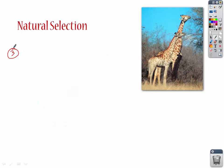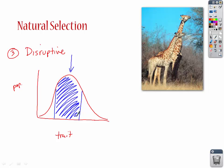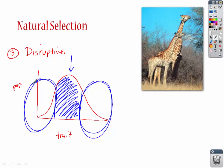Let's move on to the third way that natural selection can occur, and this one is called disruptive. This type is where the most common part of the trait becomes the negative and will die out. There's a selective pressure which impacts the most common part of the trait, and that's going to be the part that dies out. The population is going to be split into the two extremes. This usually happens because of a change in environment — a selective pressure — and it causes two distinct populations to form from the extremes of that original population.